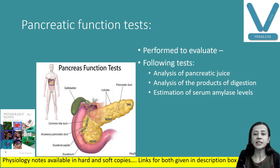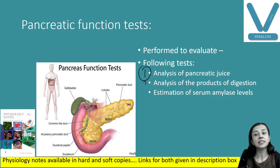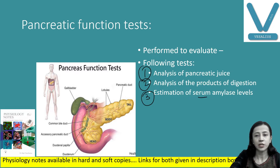The tests are mainly divided into three different groups. Number one: analysis of pancreatic juice. Number two: analysis of the products of digestion. And number three: estimation of serum amylase level.